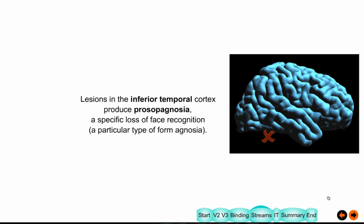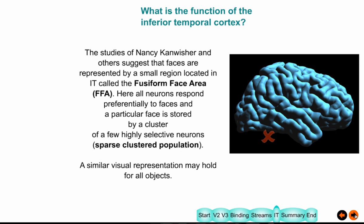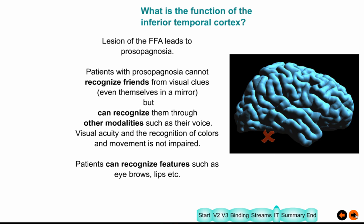Nancy Kanwisher discovered that there's a tiny place called the fusiform face area (FFA). When you just show faces, it lights up. Down in the inferior part of the temporal sulcus, we find this tiny area that lights up for faces. If you locate a neuron there, you find it's very particular to a particular face, and these form clusters — columns, one next to each other — that all prefer that face. If you have a lesion of that area, you have prosopagnosia. We'll show you a patient towards the end of the lecture who has this problem.